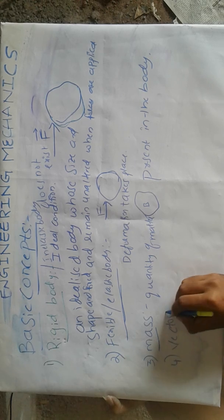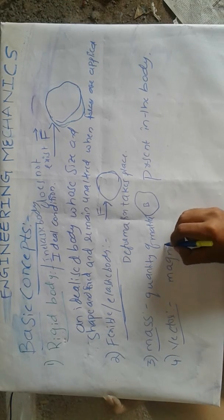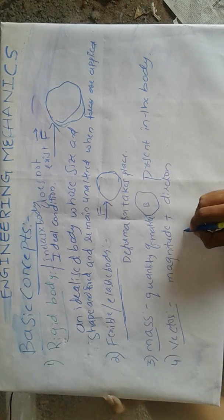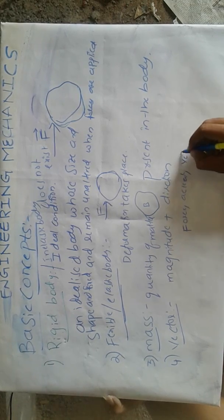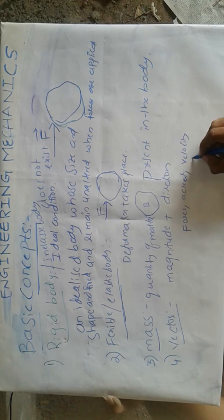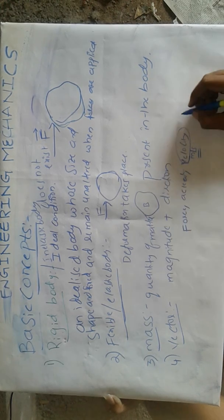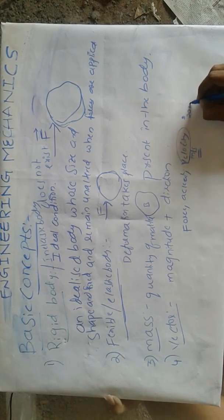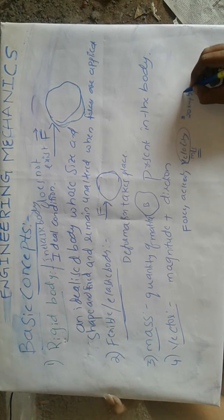Next, vector. A quantity which has both magnitude and direction is said to be a vector. For example, force is a vector. Velocity is also a vector, because we cannot define velocity with only its magnitude. Its magnitude indicates speed — say 20 km per hour — but we also need to specify the direction, such as east to west direction.